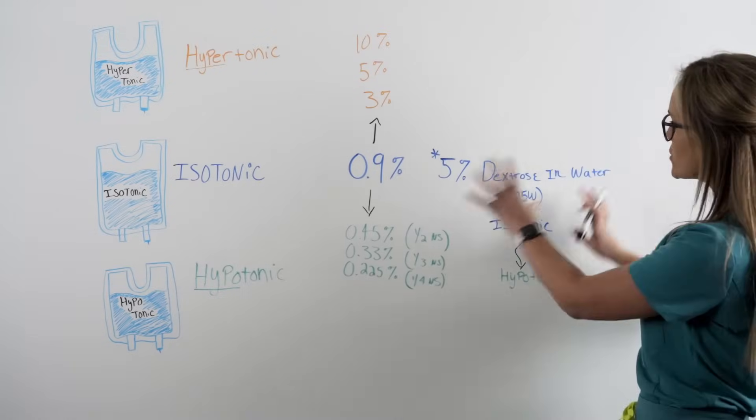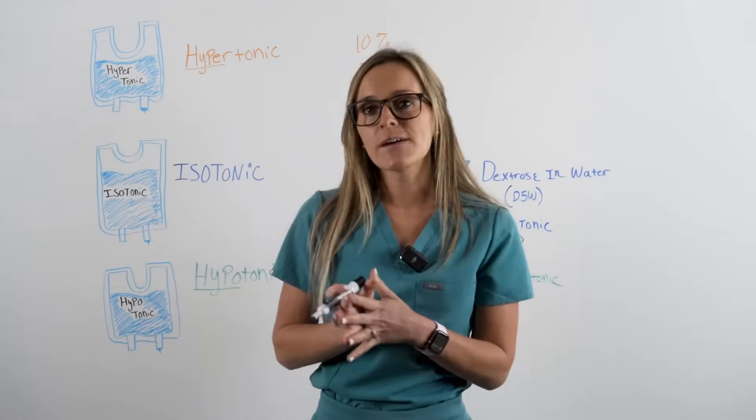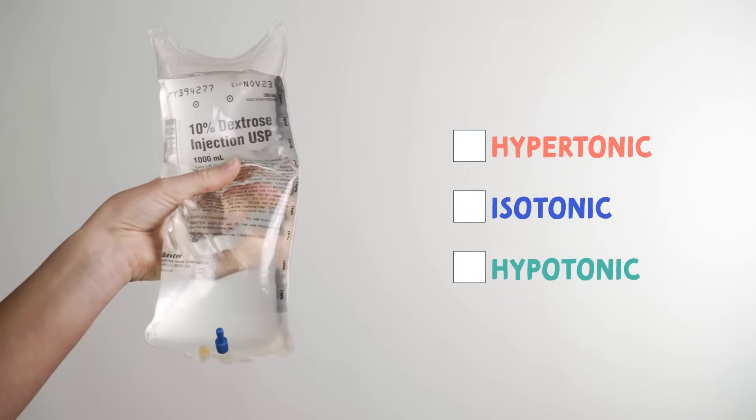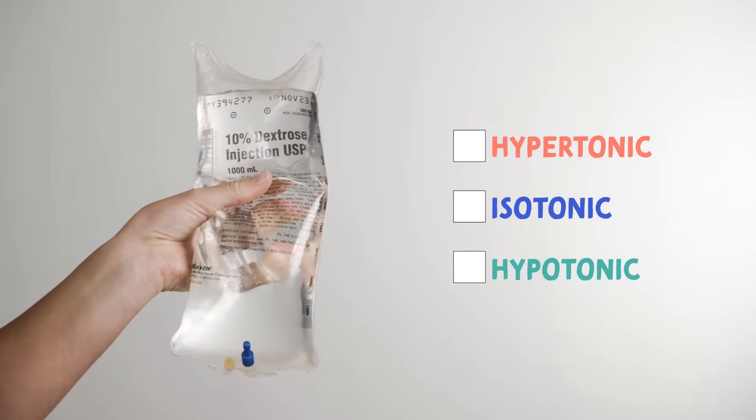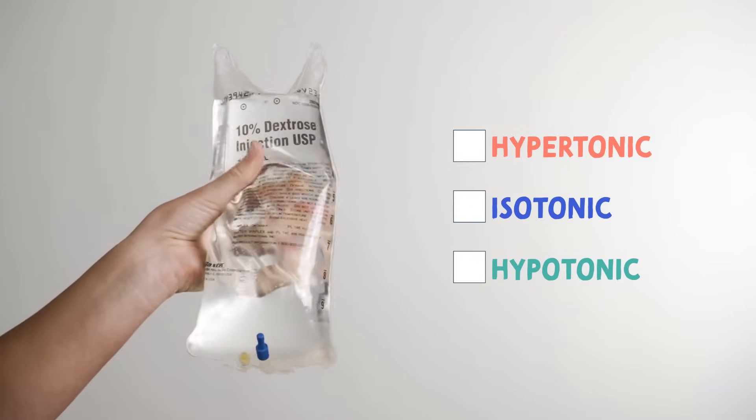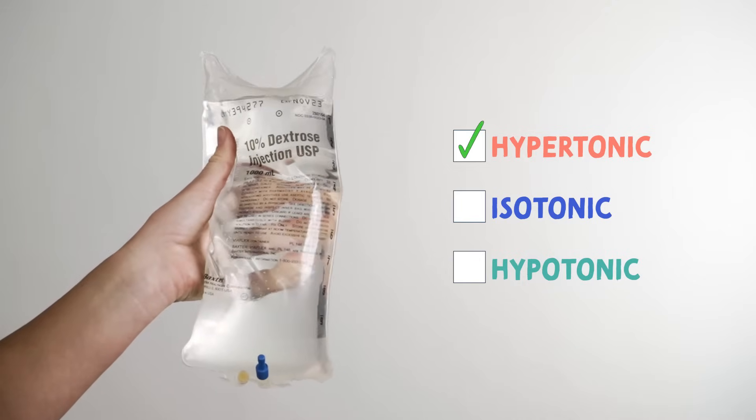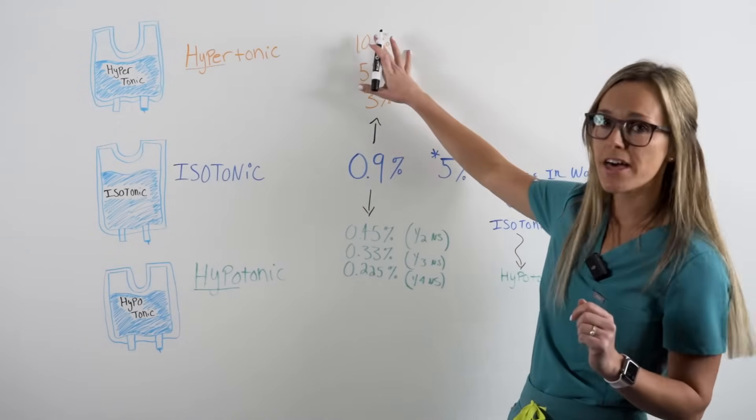So to make sure you understood everything we just talked about with the exceptions, let's test your knowledge. The first example is 10% dextrose. Is this a hypertonic solution, isotonic solution, or a hypotonic solution? 10% dextrose is a hypertonic solution. Looking at our base number, 10% is greater than this, making it a hypertonic solution.